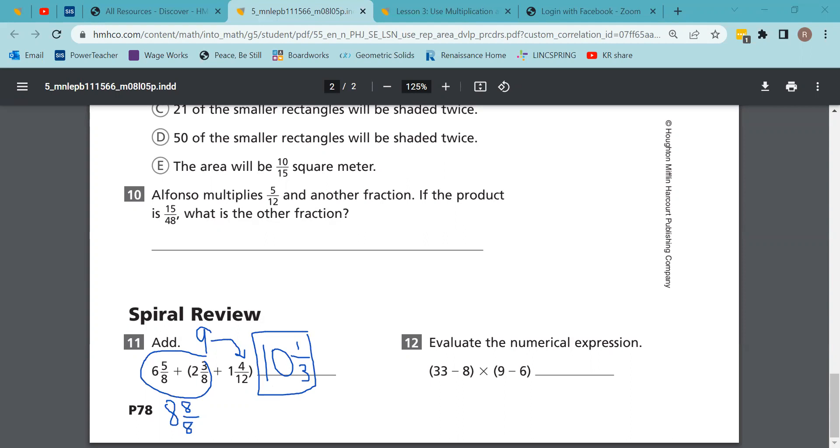Evaluate the numerical expression. Parentheses here: 33 minus 8, we've got 25 times 9 minus 6 is 3. I love when we get to count by 25s because it's just like counting quarters - 25, 50, 75, a dollar or 100. 25 times 3 is 25, 50, 75. And you did it, good work.